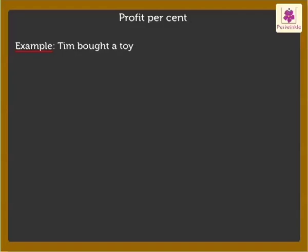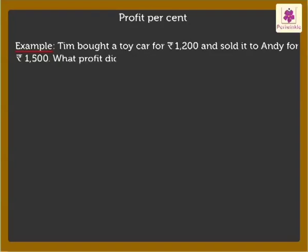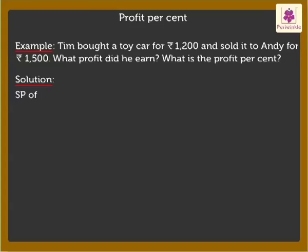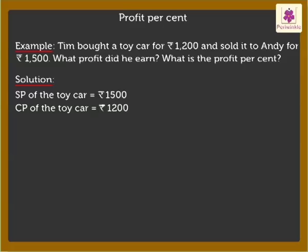Tim bought a toy car for 1,200 rupees and sold it to Andy for 1,500 rupees. What profit did he earn? What is the profit percent? Selling price of the toy car is equal to 1,500 rupees. Cost price of the toy car is equal to 1,200 rupees. To find the answer, we follow these steps.